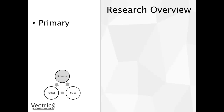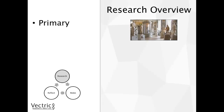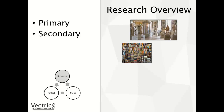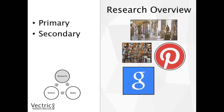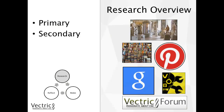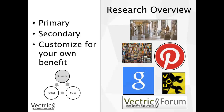Let's have a quick recap of research. Primary research is the physical research — going to places such as museums, galleries, or shows, and looking at your surroundings such as objects or furniture. Secondary research is written research — books, magazines, search engines, and applications. We can also look at what Vectric has to offer: the Vectric Forum, the Vectric Labs site, case studies, and Projects of the Month. Understanding all these options is about customising your research approach for your own benefit.